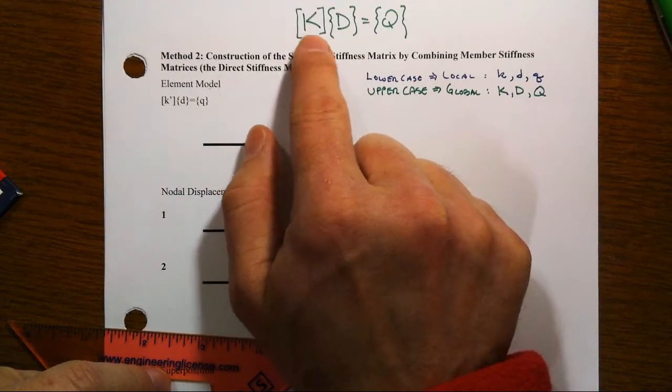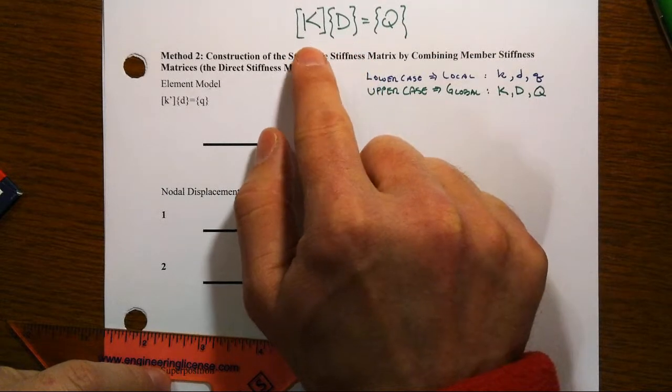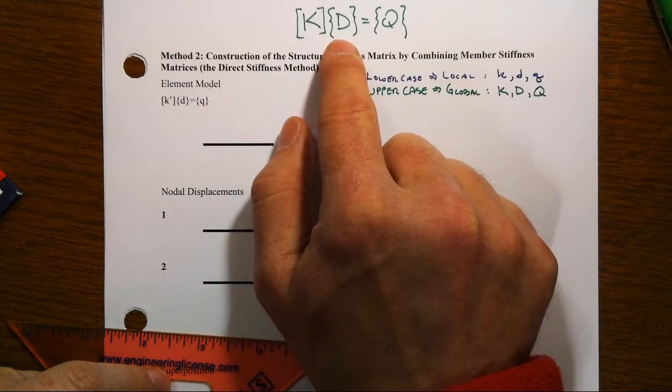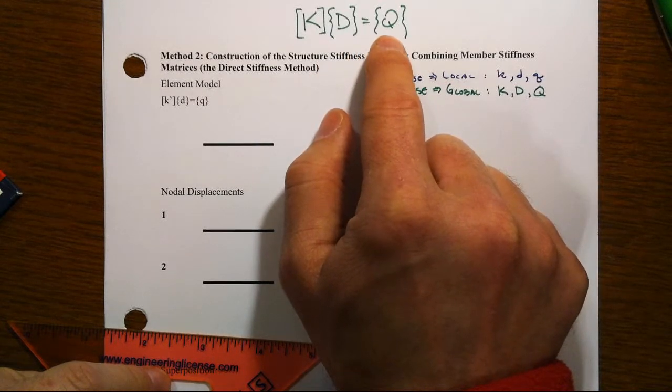So the structure itself is represented by the big capital K, and we're going to solve these simultaneous equilibrium equations for the unknown displacements that happen in response to the applied nodal forces.